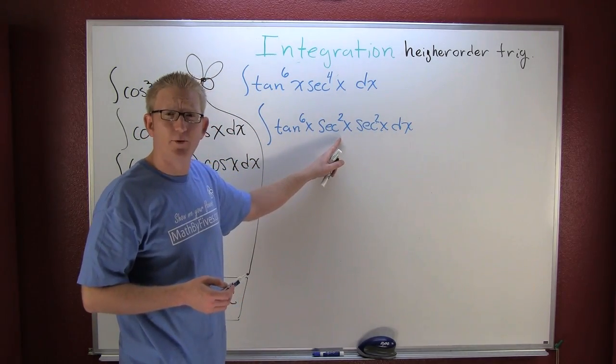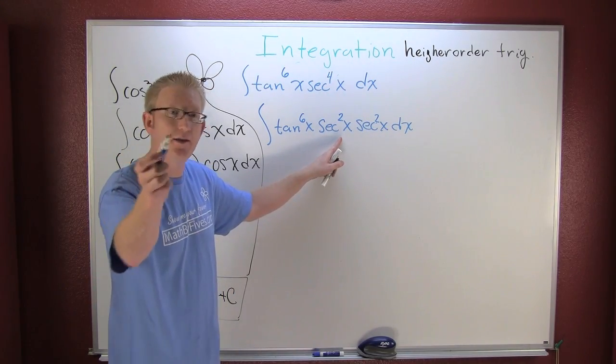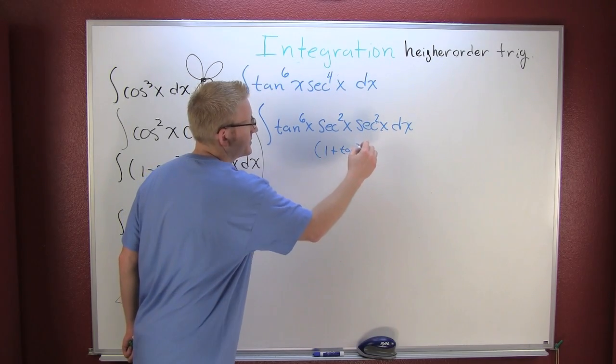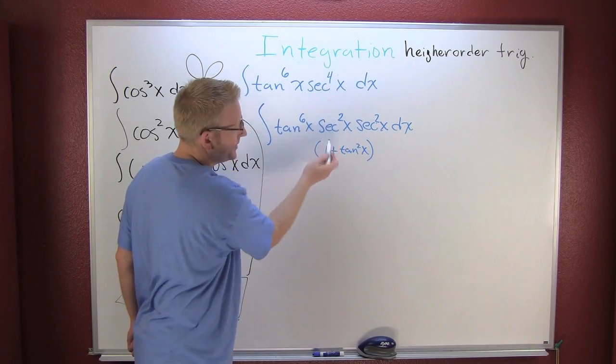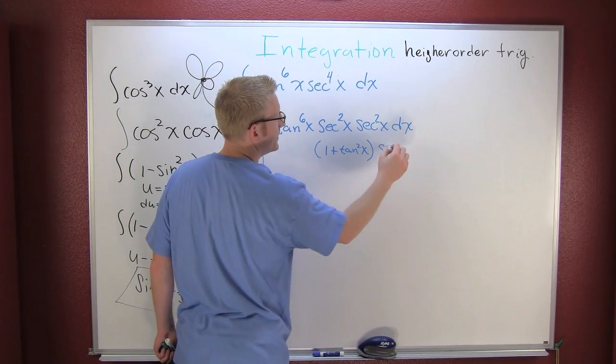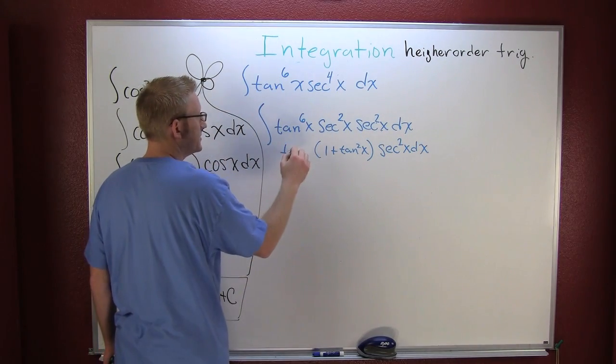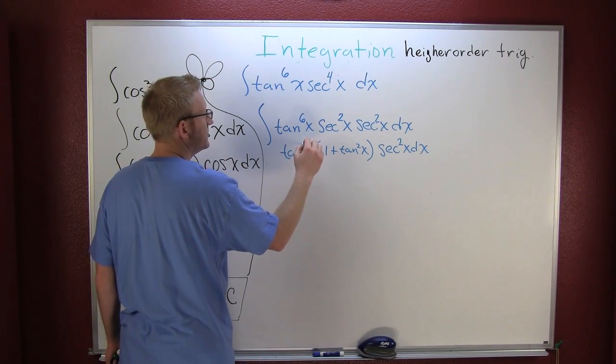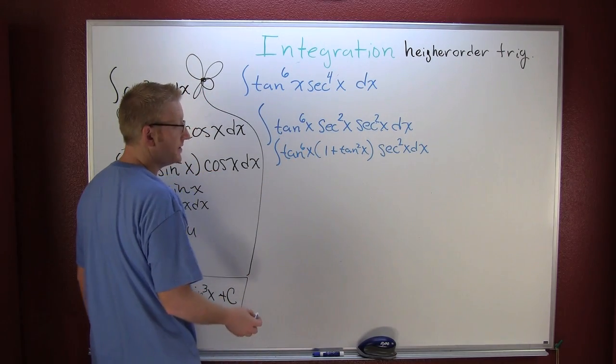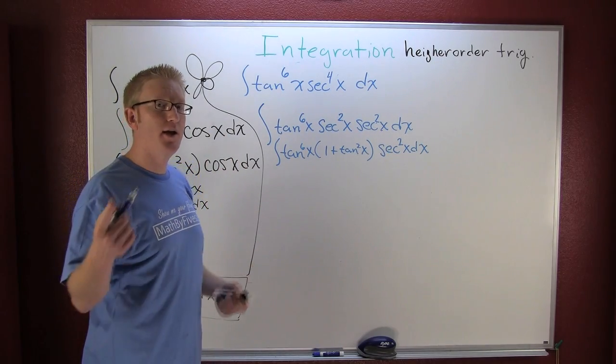We got that secant squared, but we've introduced another one. I wish we could get rid of that. Another Pythagorean identity? I like the way you're thinking. So this is one plus tangent squared x, is that right? Is that how that secant breaks down? Break it down. Secant squared x dx, tangent to the sixth power x, and we're trying to integrate that.